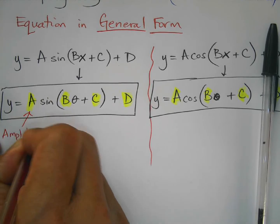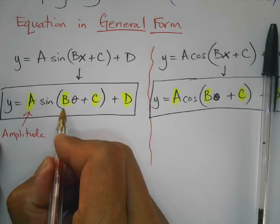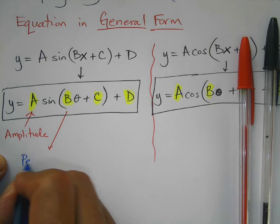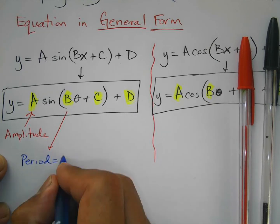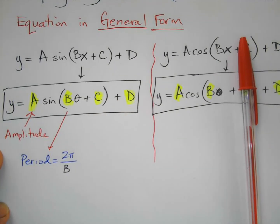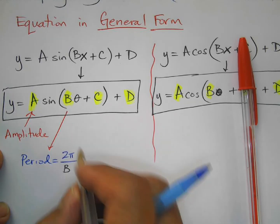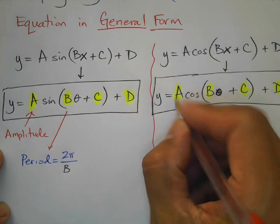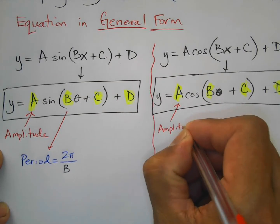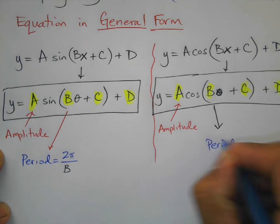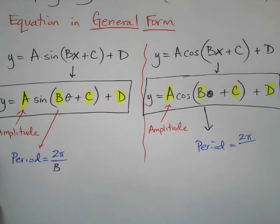You already know that a stands for amplitude — remember the absolute value. The b is not your period, but we use it to find the period: period equals 2π over the b value. Same thing — a is amplitude, and b is used for the period: period equals 2π over b.